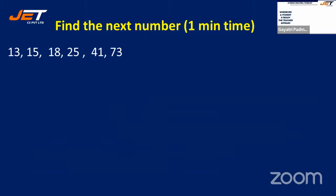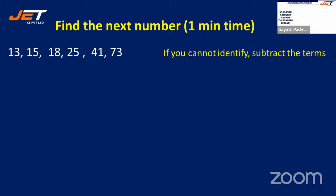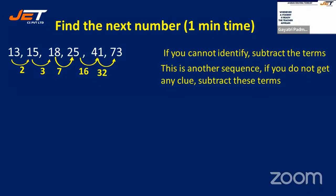Now let us try another one: 13, 15, 18, 25, 41, 73. Using the same hint, if you cannot find any clue, find the differences: 15−13=2, 18−15=3, 25−18=7, 41−25=16, 73−41=32.